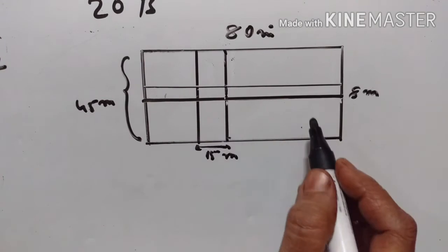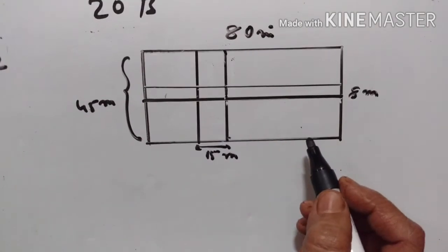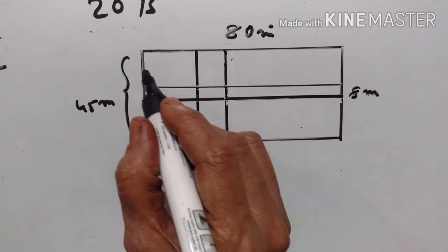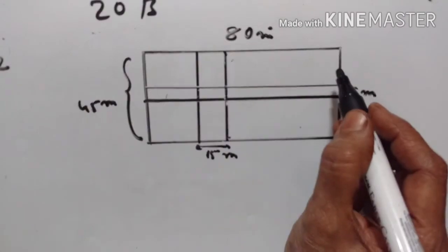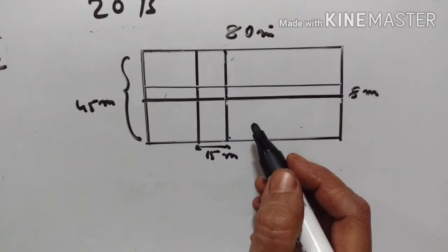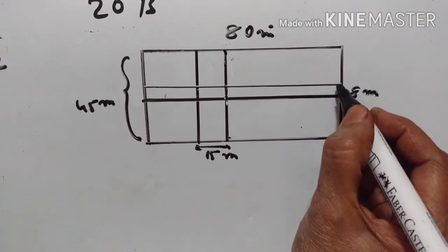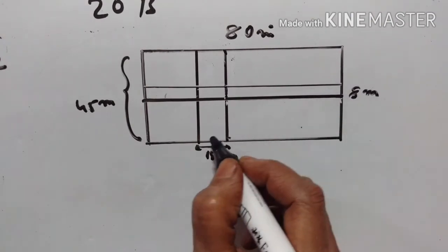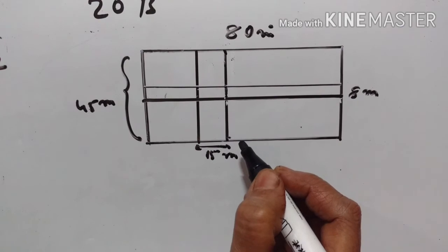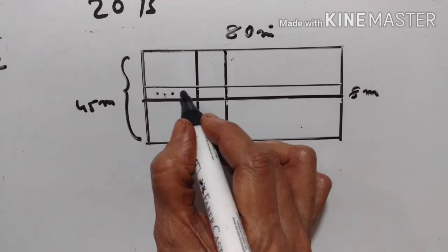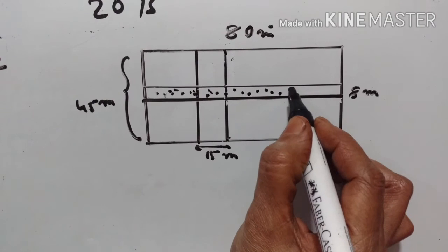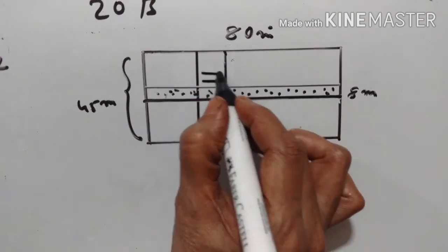Twelfth problem. This diagram shows two paths drawn inside a rectangular field 80 meters long and 45 meters wide. The widths of the two paths are 8 meters and 15 meters. Find the area of the shaded portion — this part and this part.